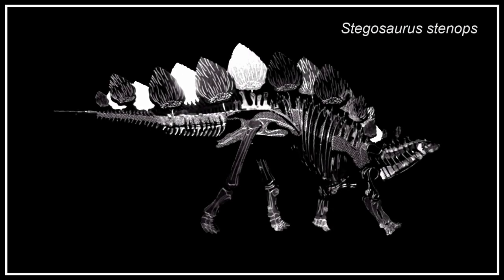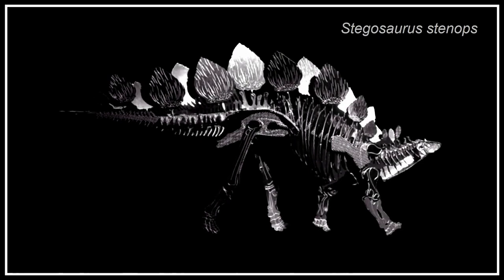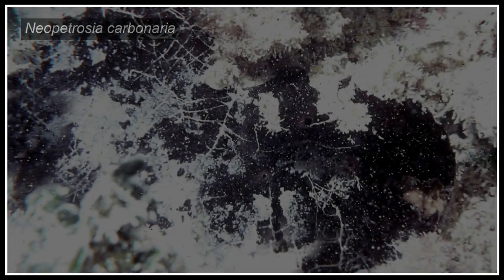The dinosaur Stegosaurus grew an asymmetrical arrangement of plates, with many of the plates showing marked asymmetry individually. Some animals, such as this black sponge, have no semblance of symmetry whatsoever.